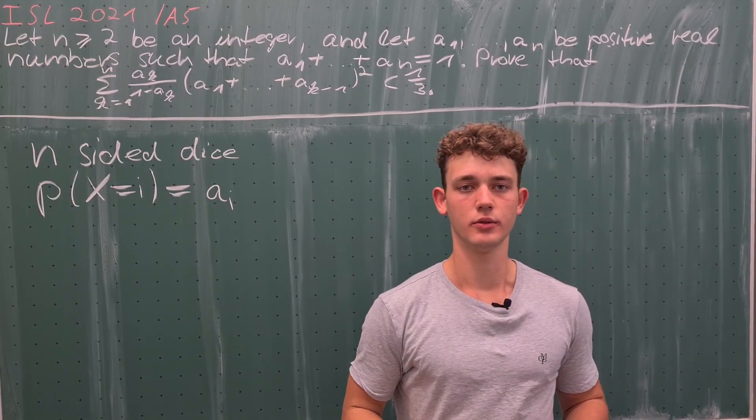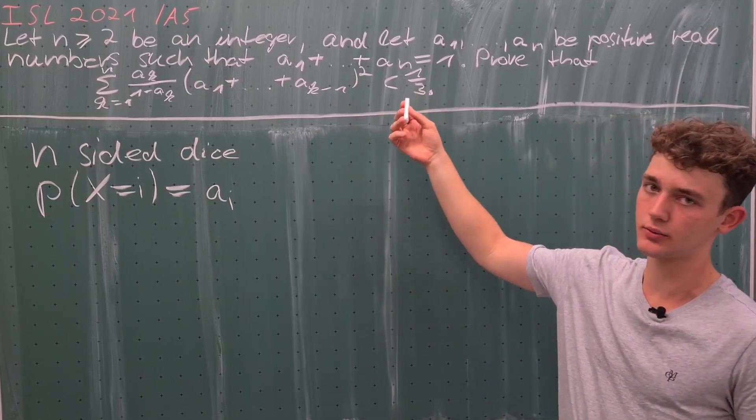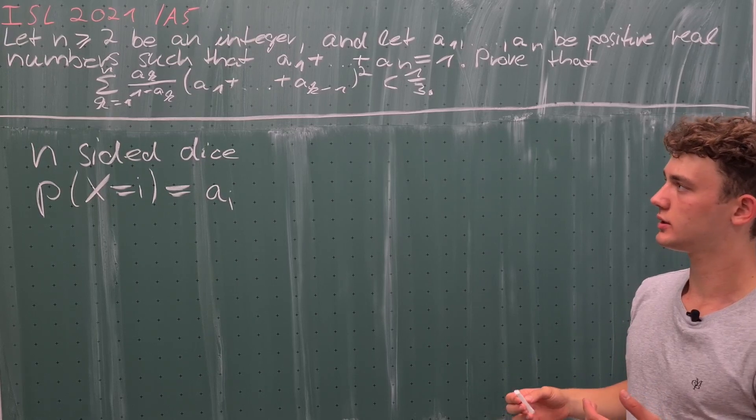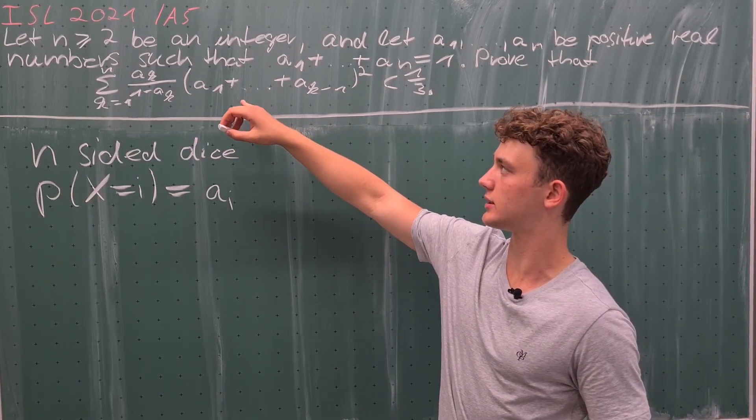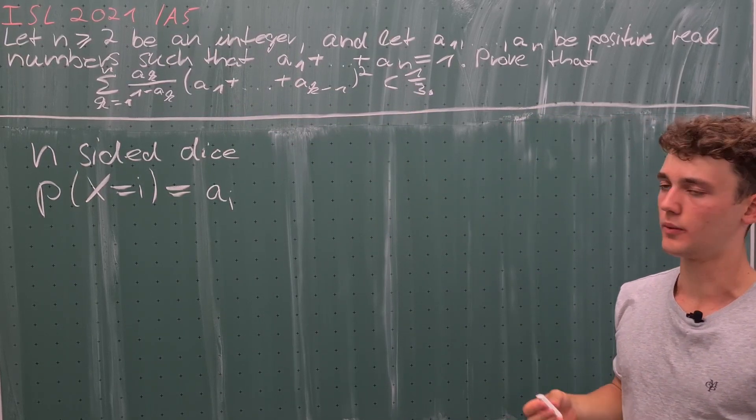Now we want to do some probabilistic experiment to show that this inequality is true. Therefore, we need to double count something which we can interpret in a certain way and also evaluate it at the value of one third.